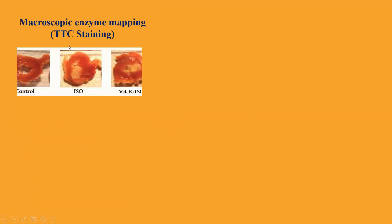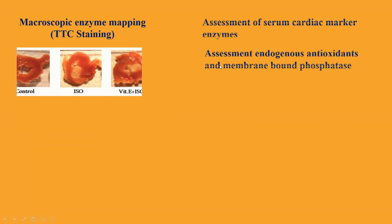TTC staining — that is triphenyl tetrazolium staining — is used for macroscopic enzyme mapping; this will show the infarct area after treatment with isoprenaline. Biochemical markers specific to cardiac tissue, such as troponin T, LDH, and CK-MB, can be estimated. Endogenous antioxidants and membrane-bound phosphatases are very important parameters if you are testing your drug as an antioxidant; these can be measured in the heart homogenate.